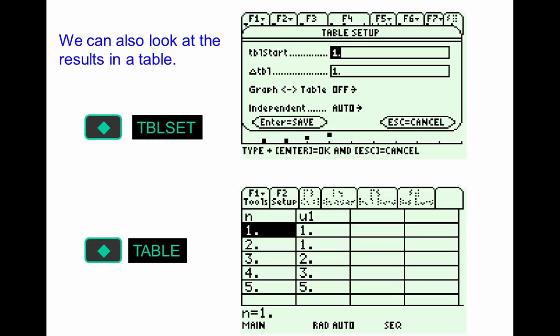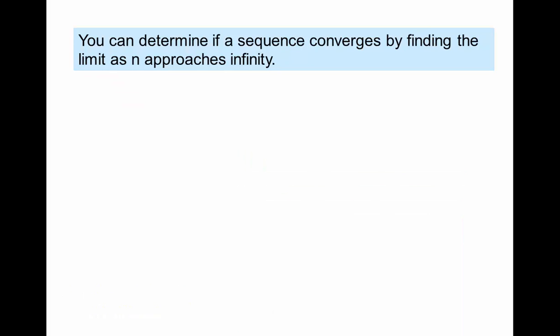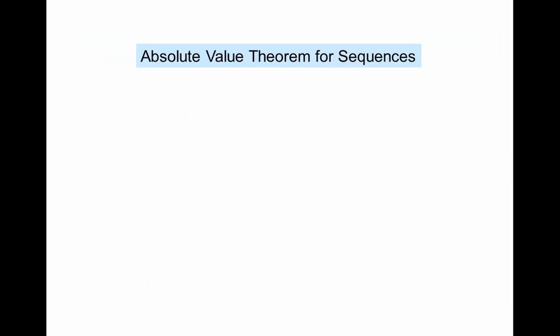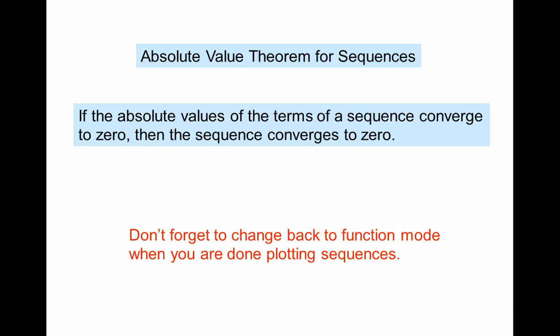You can scroll down in the table to see more values and check whether a sequence converges. The absolute value theorem for sequences states that if the absolute value of the terms goes to zero, even an alternating sequence will converge. When you're done working with sequences, remember to change your mode back.